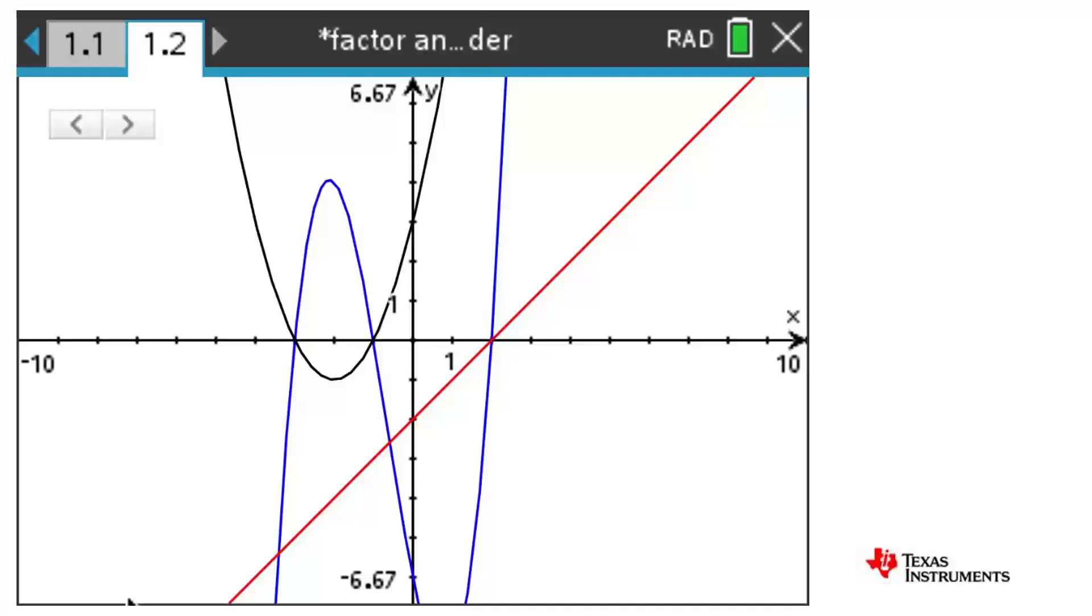We see that our divisor, x minus 2, crosses the x-axis at 2. The same point as our original function, or dividend, crosses the x-axis. In other words, p of 2 equals 0.